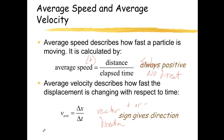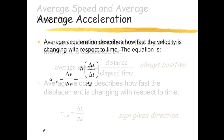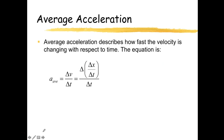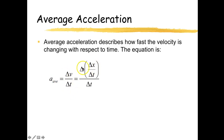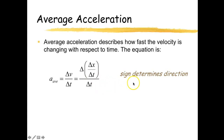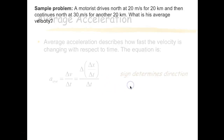Speed is always positive, while for velocity the sign does give the direction. Average acceleration describes how fast the object's velocity changes with respect to time. Acceleration is the change in velocity over the change in time, which is the change in position over time divided by time again. The sign here also determines direction, so it is also a vector.